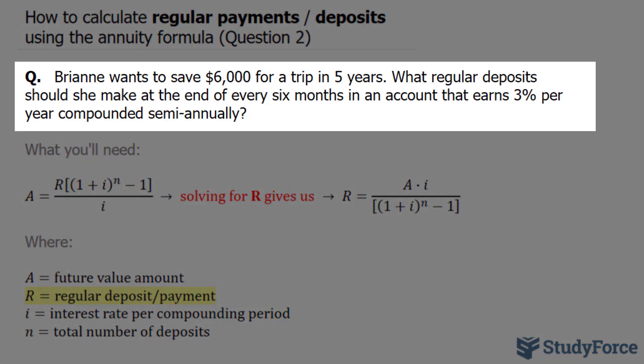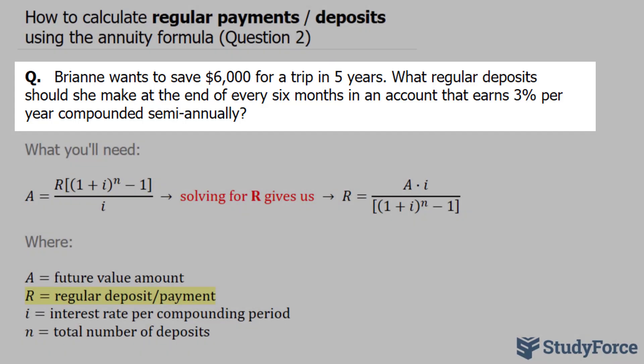Breanne wants to save $6,000 for a trip in 5 years. What regular deposits should she make at the end of every 6 months in an account that earns 3% per year compounded semi-annually?